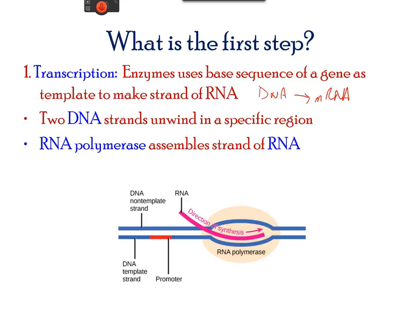The first step of transcription, also called initiation, requires a DNA double helix to unwind in the region of mRNA synthesis. It starts at a promoter site and then moves downstream towards a gene that needs to be copied. Various enzymes and proteins involved in transcription bind at this promoter site. The messenger RNA is transcribed in only one direction.